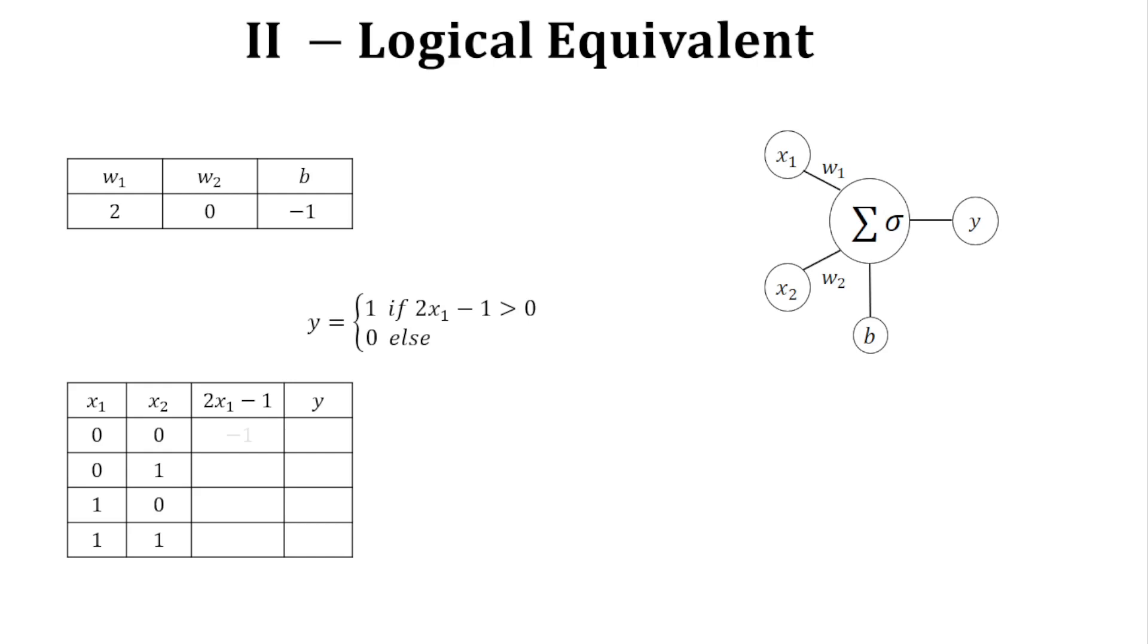Now, according to this formula, we can fulfill the table and apply the threshold. And here is the output. When looking closely, y is actually identical to x1. So the boolean formula equivalence, or the logical gate, is y equals x1.